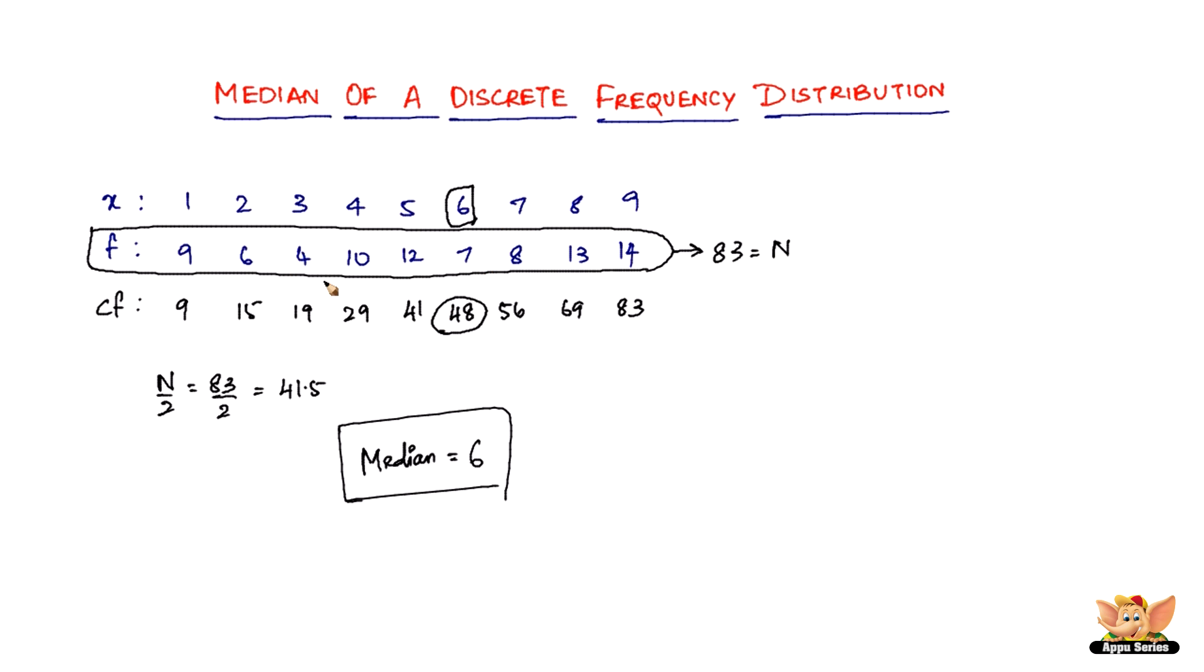Let me take you through this once more. This is a discrete frequency distribution. You find the cumulative frequency by adding successively—first take 9 as is, then add 9 to 6 to get 15, then 15 plus 4 to get 19, then 19 plus 10 to get 29, and so on.